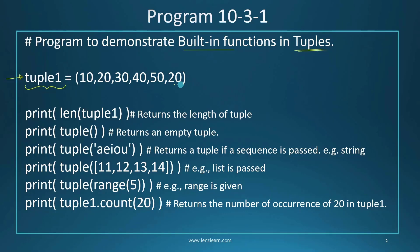The first print statement calls the built-in function len() to find out how many elements are in tuple1. If you count, there are six elements inside this tuple, so this print statement is going to print six as the result.